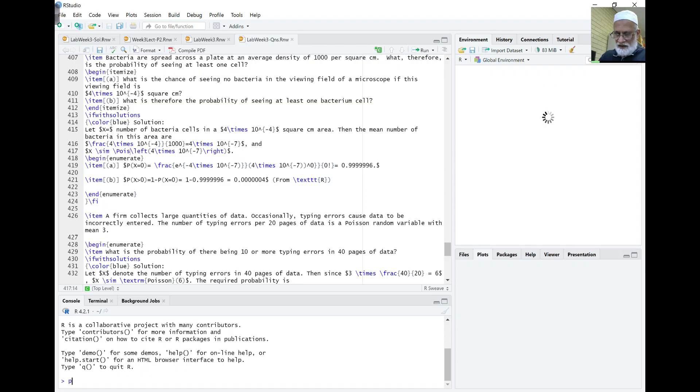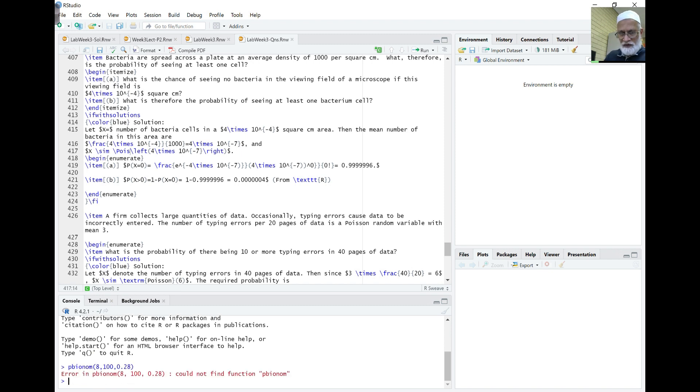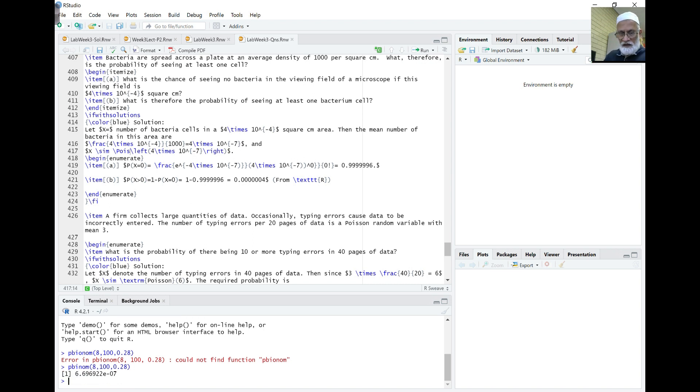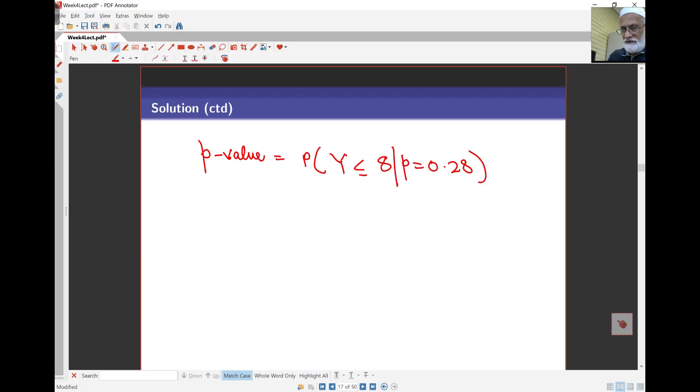Let me fire up R. It's pbinom, I had 8 on the panel, 100 altogether, and 0.28 is the population proportion. That's quite small: it's 6.6969 times 10 to the negative 7.